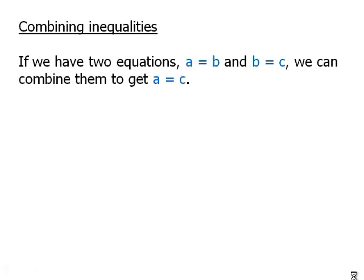So, combining inequalities. If we have two equations, first of all, a equals b and b equals c, we can certainly combine them to get a equals c. Technically, that's called the transitive property of equality.